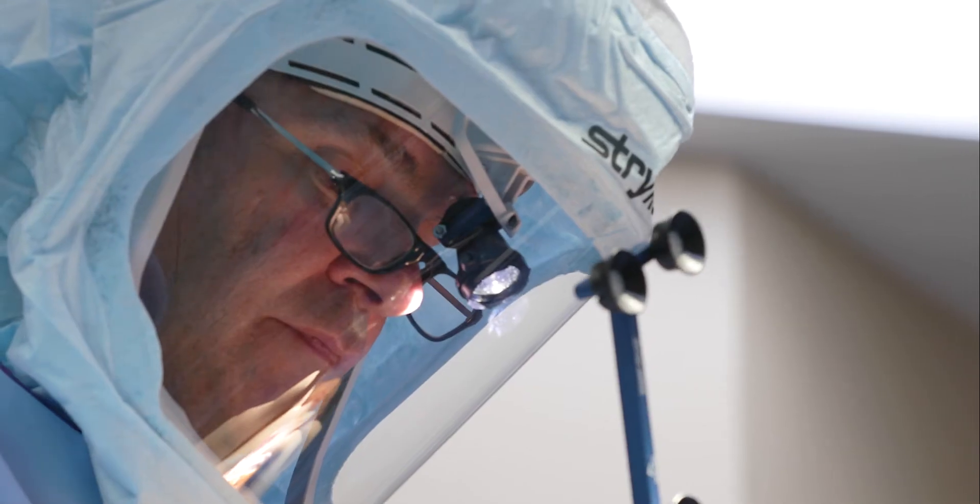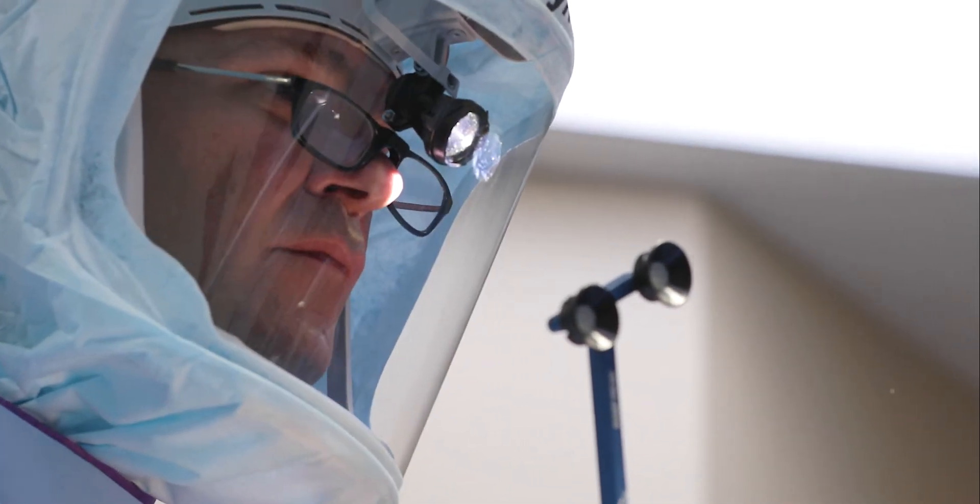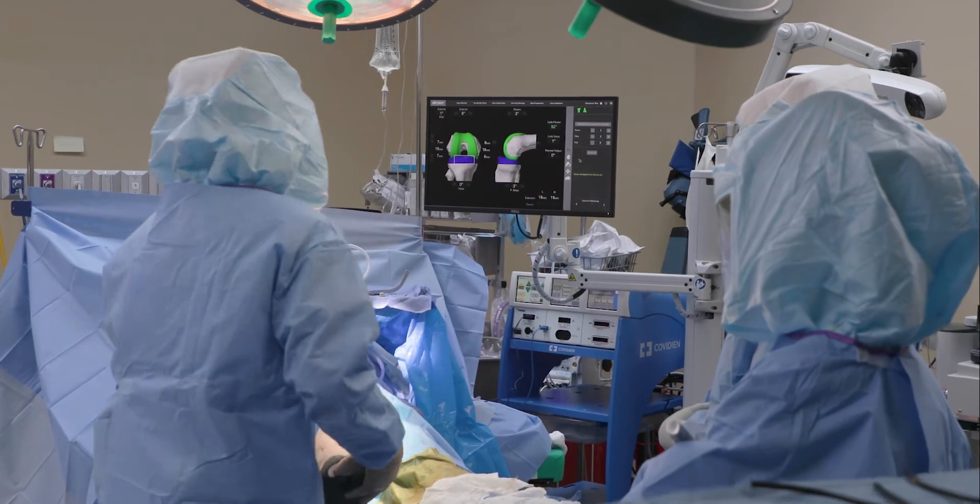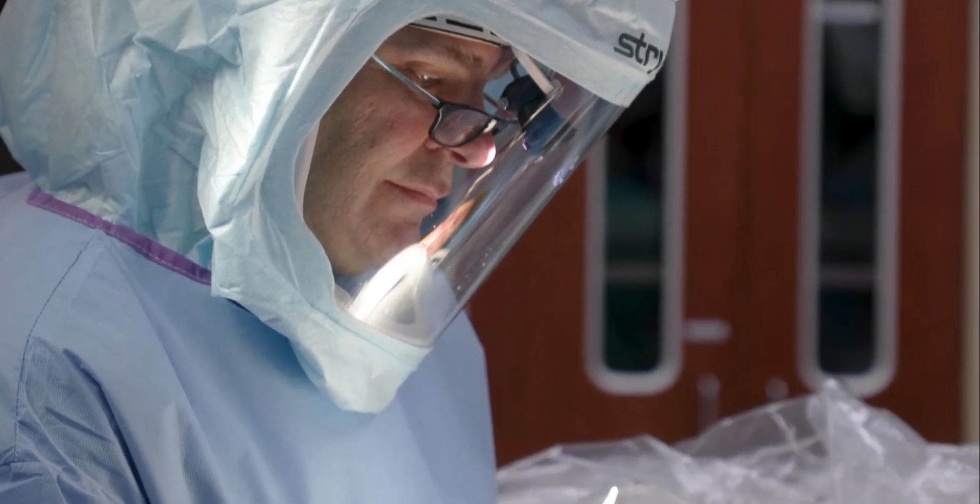What's remarkable is, normally during surgery, the surgeon is looking at the surgical field. With this system, we're looking at a screen that has a virtual knee up there. As you're making the cut, it's sort of like a very fancy video game. It shows the area going from green to a different color to show you that it's correct, and if somebody tried to force it in a different position where you're taking too much, it comes up red.